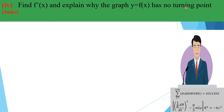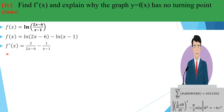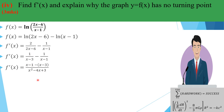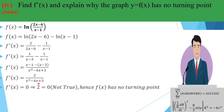Now find f'(x) and explain why there is no turning point. Writing f(x) = ln(2x-6) - ln(x-1) and differentiating each logarithmic term — the derivative of ln(g) is g'/g — we get f'(x) = 2/(2x-6) - 1/(x-1), which simplifies to -2/((x-1)(x-3)). Since f'(x) = 0 has no solution in the domain, the graph has no turning point.